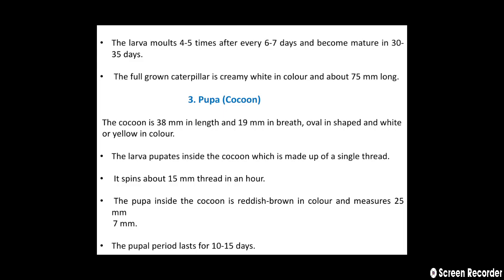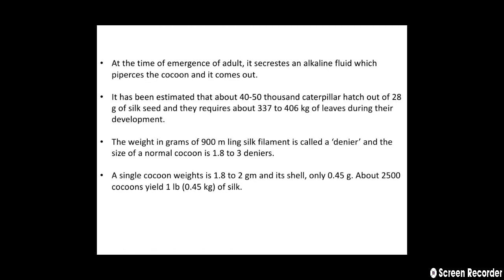The third life stage of the silkworm is the pupa or cocoon. The cocoon is 38 mm in length and 19 mm in breadth, oval in shape, and white or yellow in color. The larva pupates inside the cocoon, which is made up of a single thread. It spins about 15 mm of thread per hour, and the pupa inside is reddish brown in color, measuring 25 mm by 7 mm. The pupal period lasts for 10 to 15 days. At the time of emergence, the adult secretes an alkaline fluid which pierces the cocoon and it comes out.